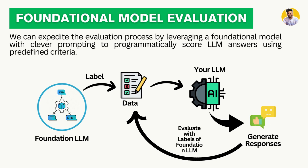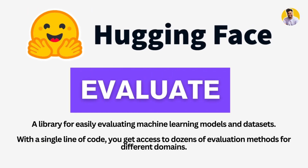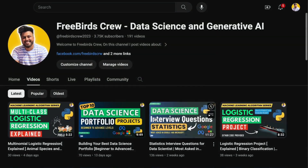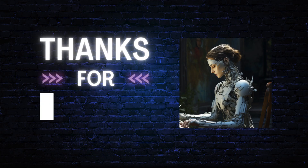There are multiple other ways to do evaluations: the Holistic Evaluation of Language Models framework, HuggingFace evaluation with AutoEval functions. In the next video, I will show you how to evaluate your language model using the HuggingFace evaluate library — with a single line of code it can evaluate multiple LLM responses across different domains. If you want to know more about prompt engineering, data science, and machine learning, watch my videos on YouTube and read my blog on Medium. Thank you guys!